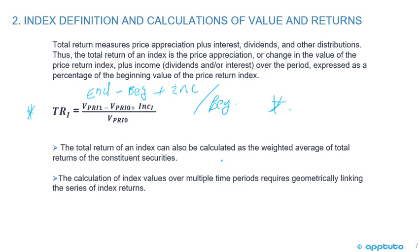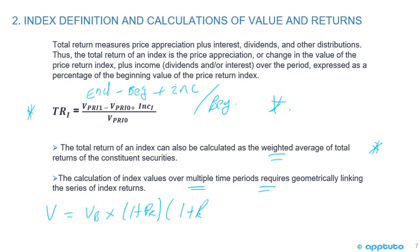The total return of an index can also be calculated as the weighted average of the total returns of the constituent securities. The calculation of index values over multiple time periods requires geometrically linking the series of index returns — multiplying the beginning value by (1 + period return) for each successive period, as we studied in quantitative methods.